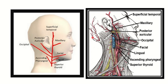First, let's identify the external carotid artery. In the first picture we can see the external carotid artery, and in the second picture as well. The external carotid artery arises from the common carotid artery and terminates into two terminal branches: one is the superficial temporal and the other is the maxillary artery.